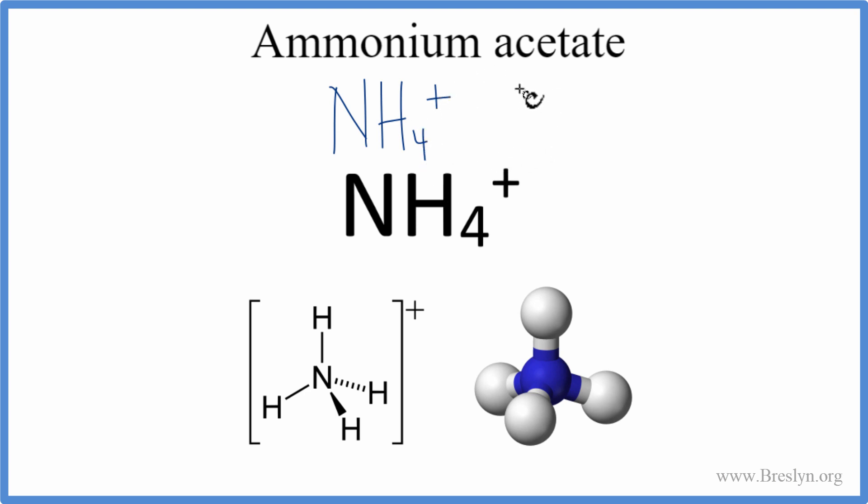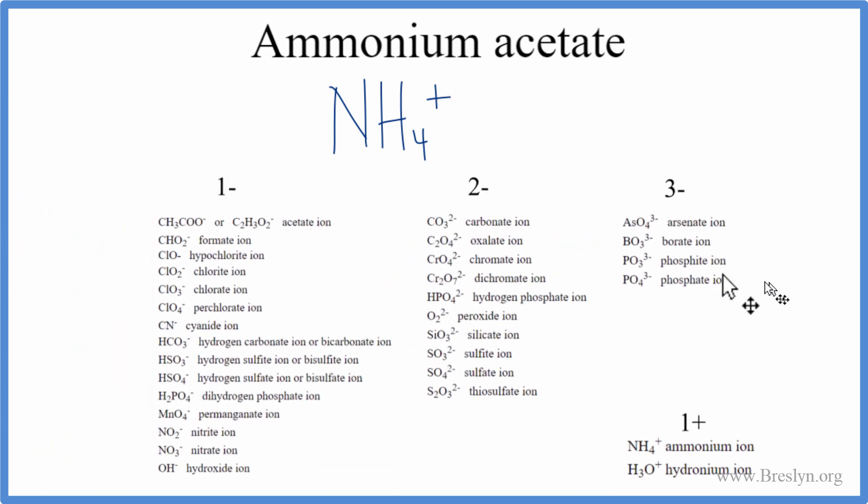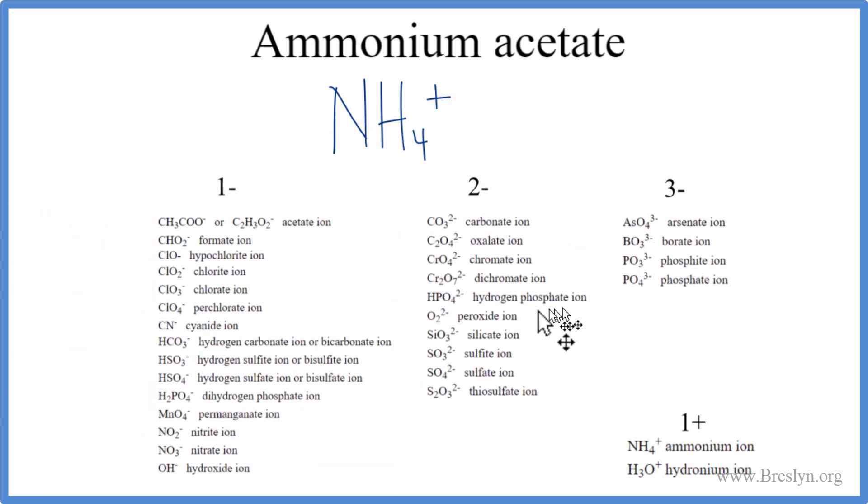Next we have to figure out what the acetate ion is. If you see -ate, you're not going to find it on the periodic table - you'll need to look it up on that same table of common polyatomic ions. Some teachers let you have this on a test, others require you to memorize it, so check with your teacher.